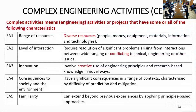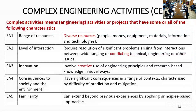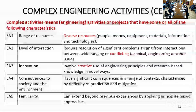EA4 is consequence to the society and environment — how the activity interacts with or helps society. It should have significant consequence across a range of contexts, considering difficulty of prediction and mitigation. EA5 is familiarity — something new should be available, representing a challenge in your approach and impact.